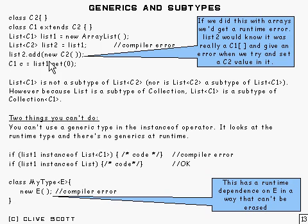Now if you think about it, if this was done with arrays, you'd get a different result because you'd get a runtime error when you tried to store a C2 in it, because the compiler would know that list2 really refers to an array of C1s, and that's why it would give you a runtime error there.